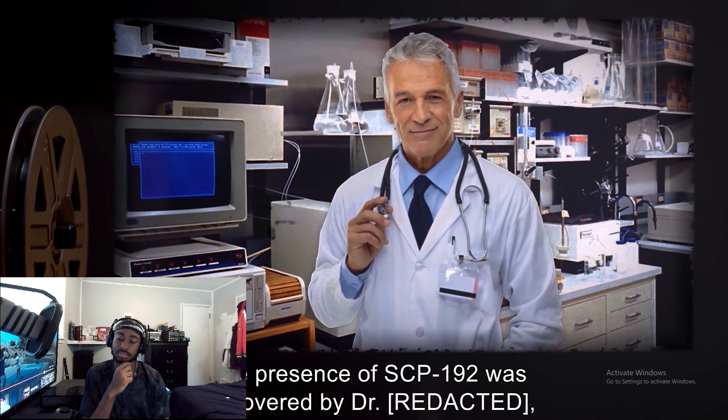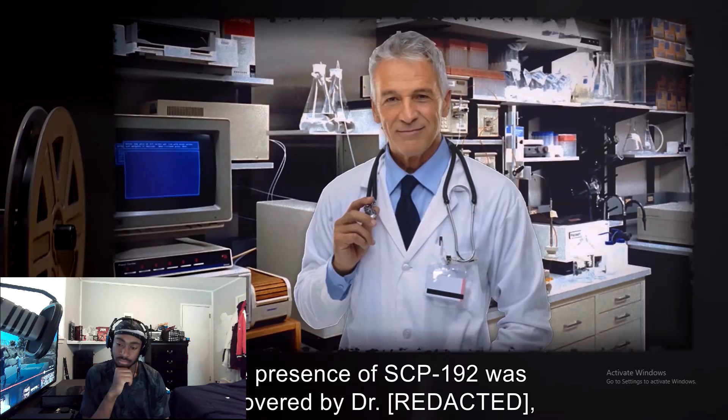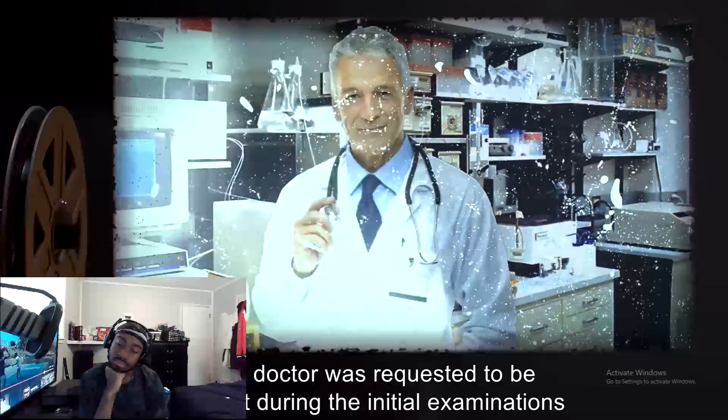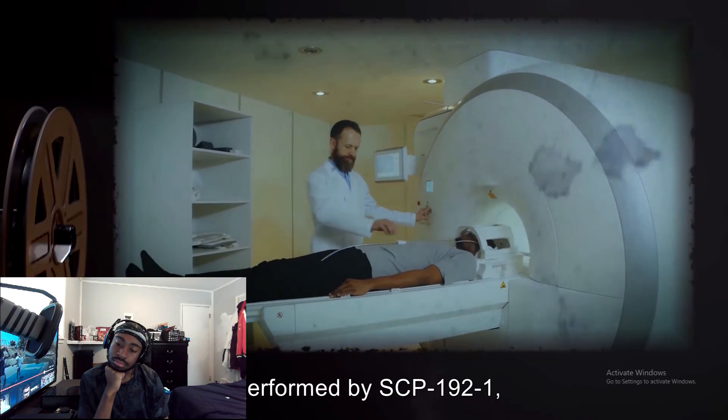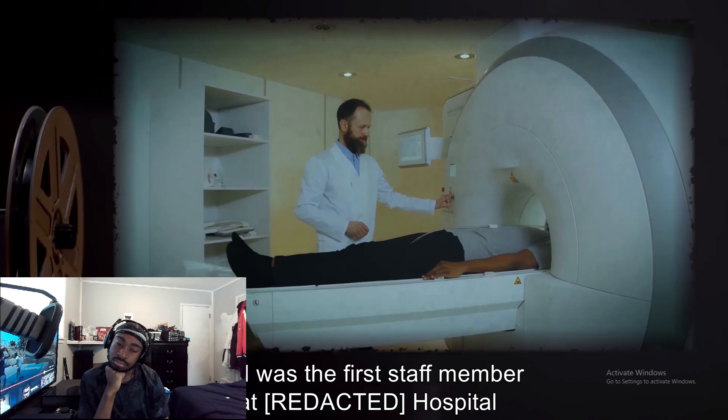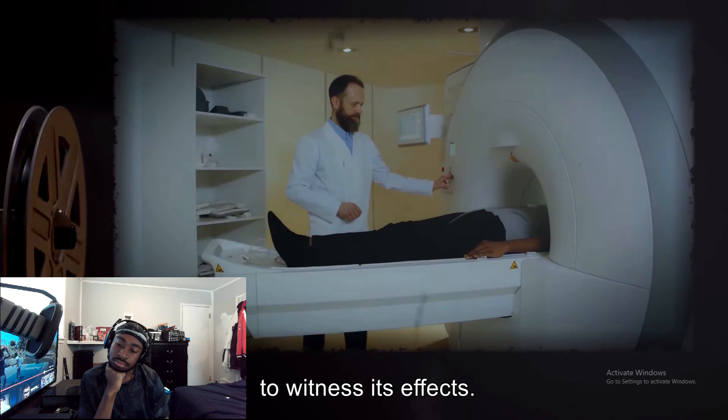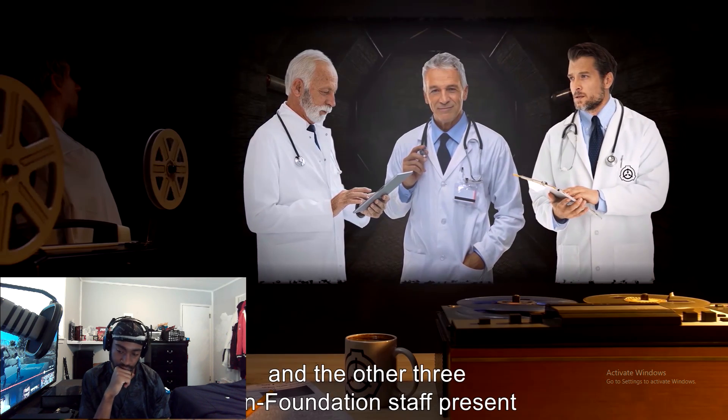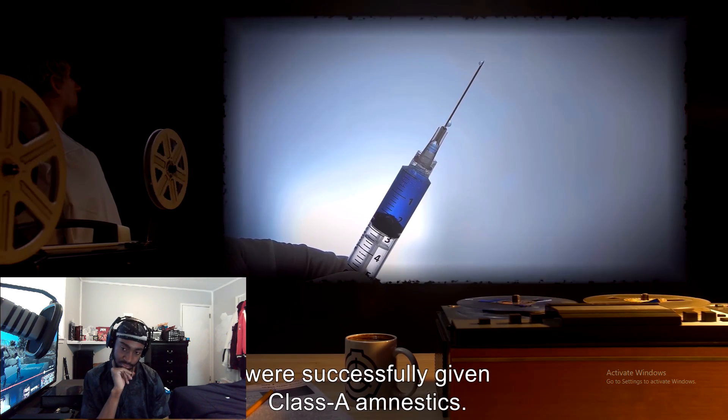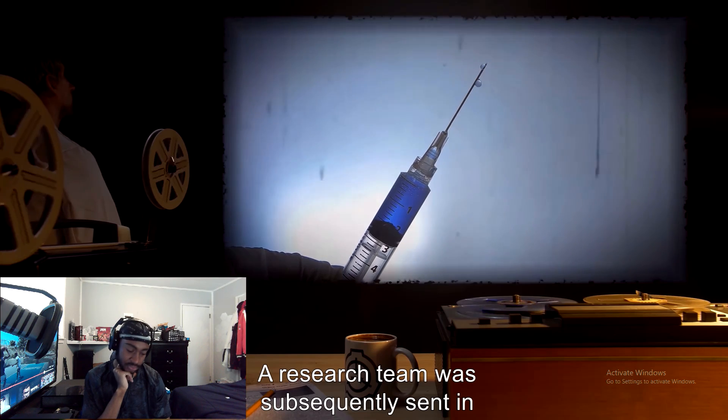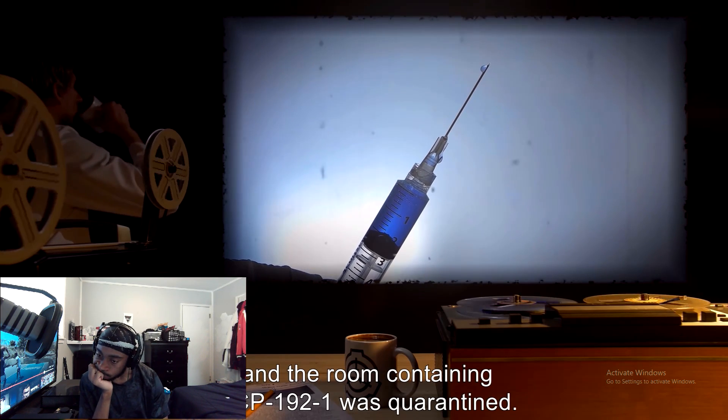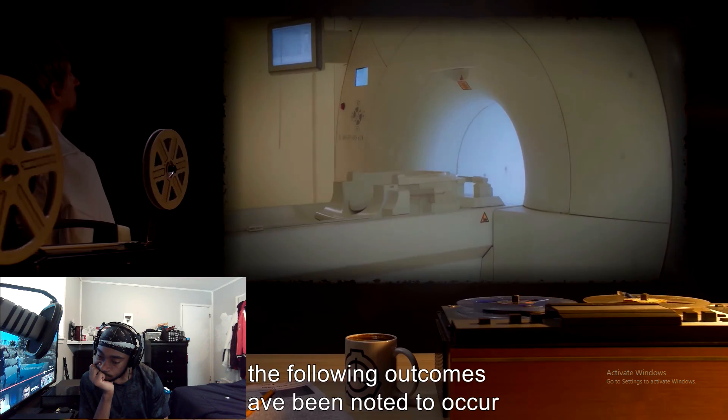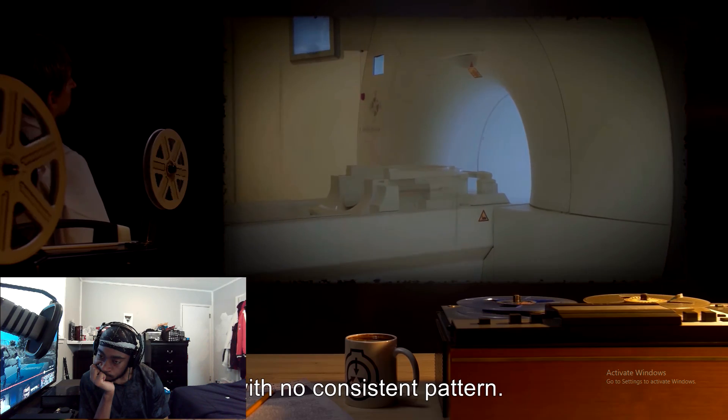The presence of SCP-192 was discovered by Dr., a covert Foundation operative tracking SCP-192-1 in 05-2014. Said doctor was requested to be present during the initial examinations performed by SCP-192-1, and was the first staff member at the hospital to witness its effects. Said doctor notified the Foundation, and the other three non-Foundation staff present were successfully given Class-A amnestics. A research team was subsequently sent in, and the room containing SCP-192-1 was quarantined. From testing of SCP-192, the following outcomes have been noted to occur with no consistent pattern.